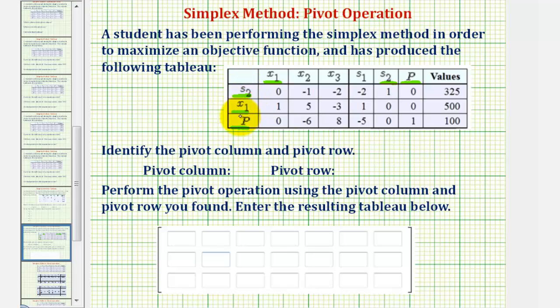To identify the pivot column, we look for the entry that's the most negative on the left side of this bottom row. We say left side because the pivot column will never be this column here on the far right. So we have a negative six here and a negative five here. Negative six is more negative than negative five, so this is our pivot column.